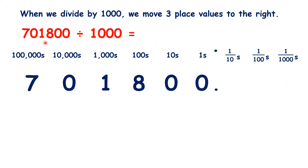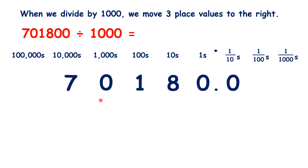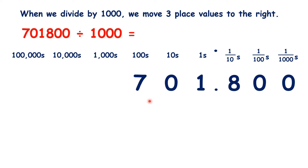So what is 701,800 divided by 1,000? We move three places to the right, and that gives us 701.800. But again, we can ignore zeros at the end of a decimal number, and just write 701.8.